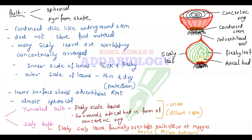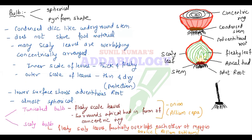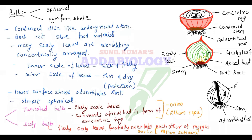The other example is scaly bulb — garlic, Allium sativum. In garlic, the central disc-like structure is only stem; the rest are the buds arranged around it. Remember: tunicated bulb — Allium cepa (onion); scaly bulb — Allium sativum (garlic). These are the examples of underground stem modification — bulb.